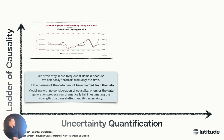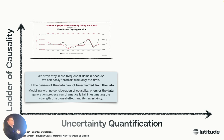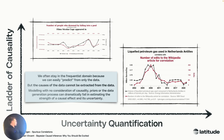There are these famous spurious correlations that seem very non-logical. The number of people who drowned by falling in a pool is perfectly correlated with the amount of films Nicolas Cage appears in. It feels like we can predict one from the other, but it doesn't imply causation. There's a great website from Tyler Vigen where he just finds correlations that completely don't make sense — like liquefied plutonium gas used in the Netherlands Antilles is perfectly correlated with the number of edits to the Wikipedia article for 'correlation'.